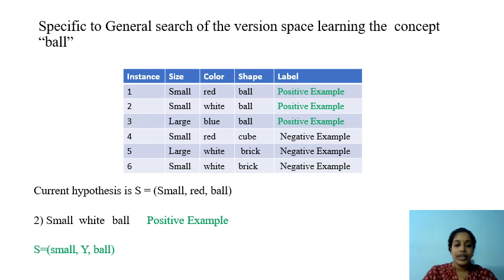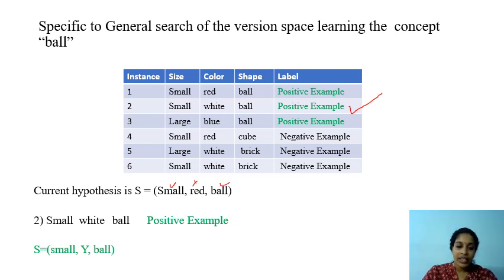The current hypothesis is (small, red, ball). Iterating over the training set, the next instance is also positive. We check whether our hypothesis accepts it: small matches, but red and white don't match, and ball matches. Since both red and white are valid for color in a positive example, we must generalize the color attribute by replacing it with a variable y. The hypothesis is now (small, y, ball).